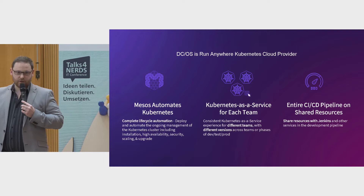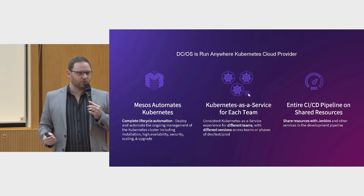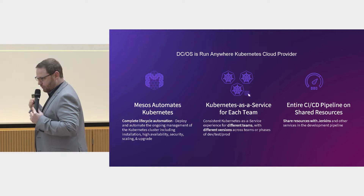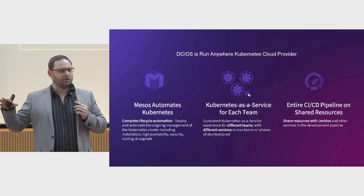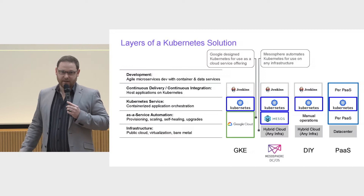We're the only provider in the marketplace that can do that today. You could have one line of business on Kubernetes 1.9.6, a development team on 1.11.4 for the latest Istio features, and another team still on Kubernetes 1.8 for a legacy application. Mesosphere gives you the ability to deploy all those different versions, orchestrate them intelligently, and share infrastructure resources across them. You can even run your CI/CD pipeline and DevOps tools on that same platform.